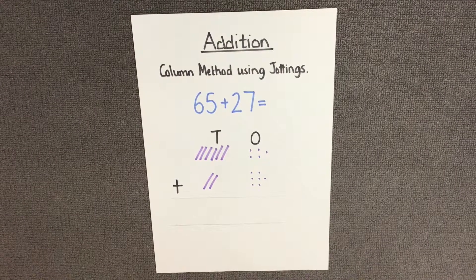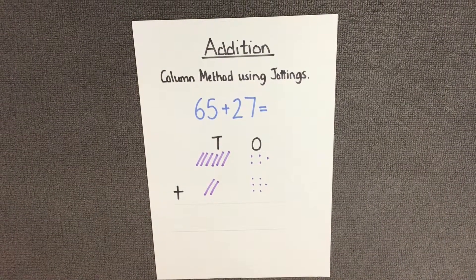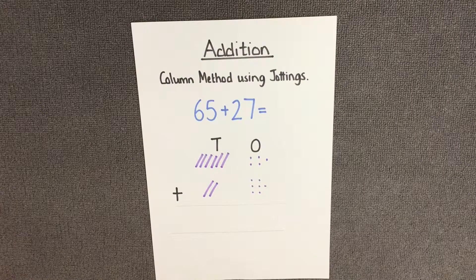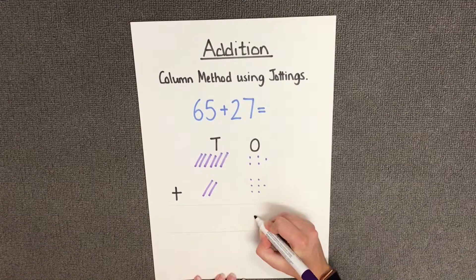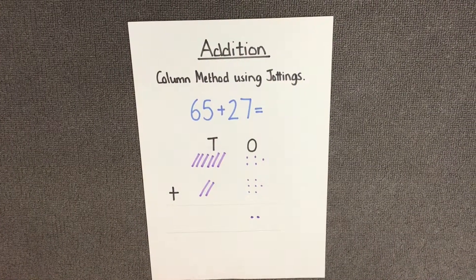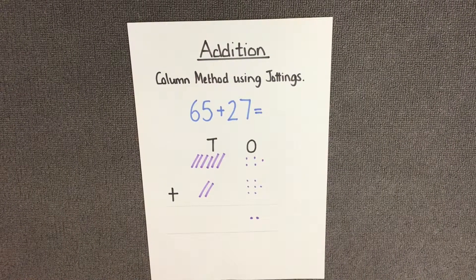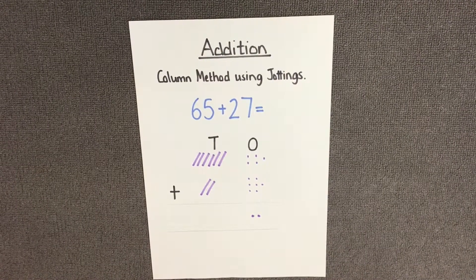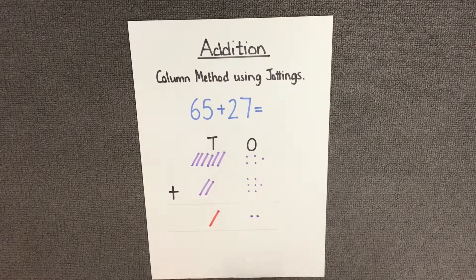Because we have more than 10 ones, we have to make a carry. In the number 12, we have 2 ones, which we represent in our ones column using our dots. And we have 1 ten, which we have to represent in our tens column using our line.